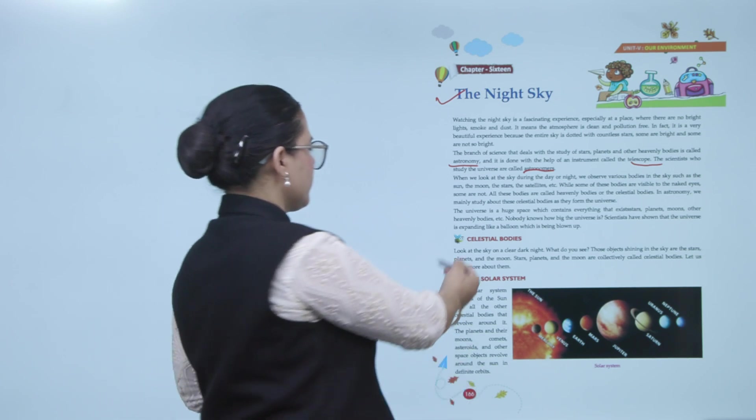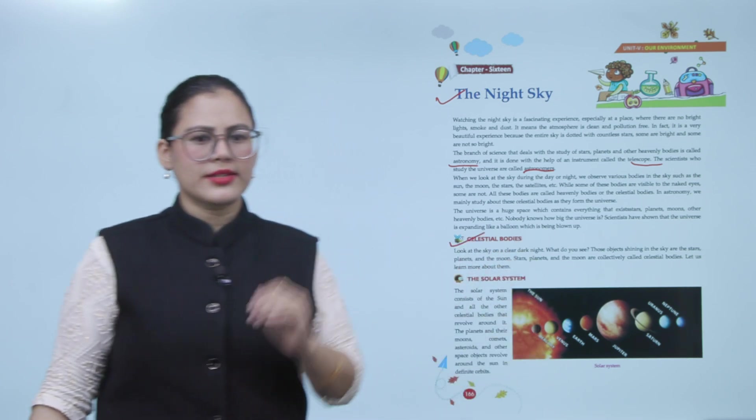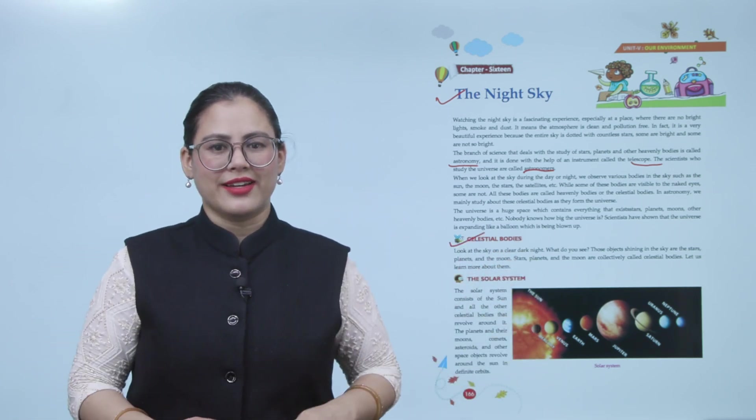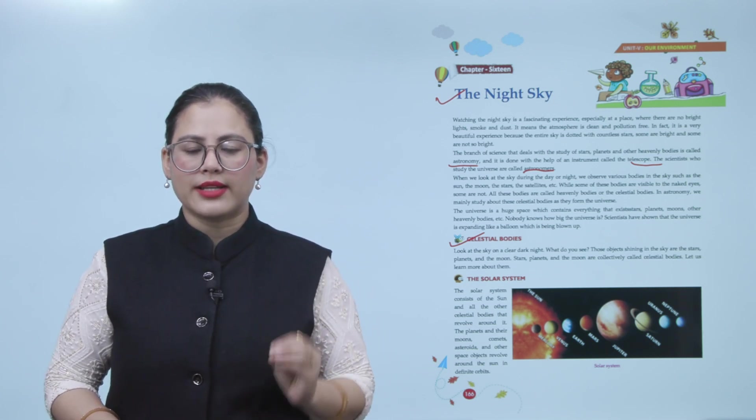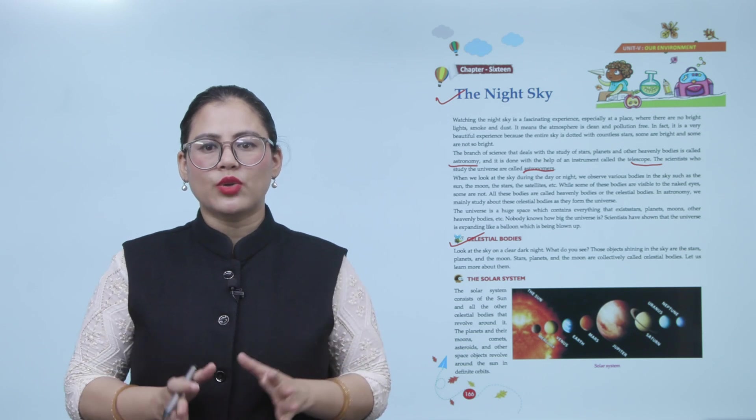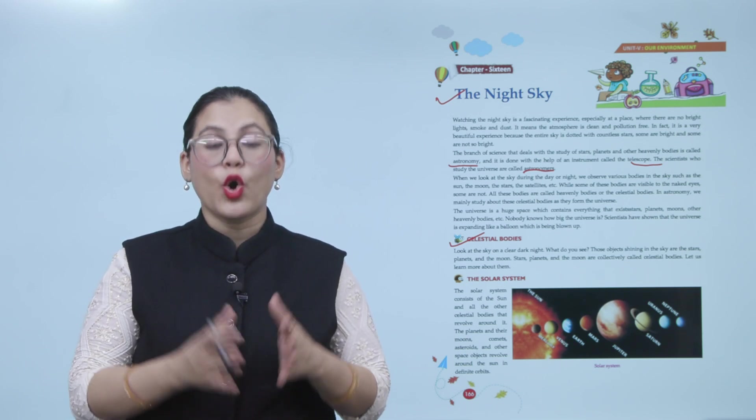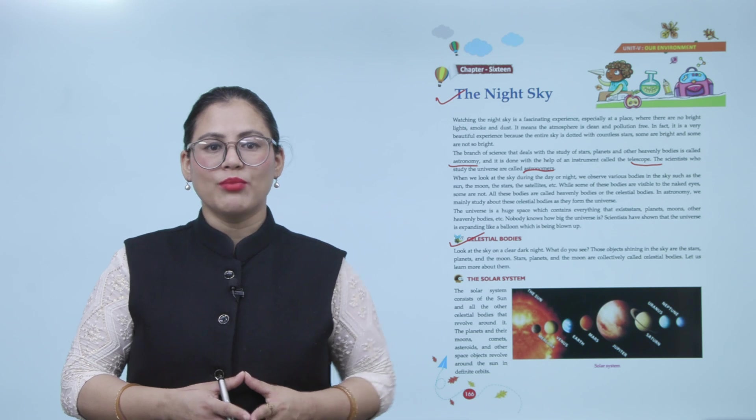Celestial bodies. Look at the sky on a clear dark night. What do you see? Those objects shining in the sky are the stars, planets, and the moon. Stars, planets, and moons are collectively called celestial bodies or heavenly bodies. Let us learn more about them.